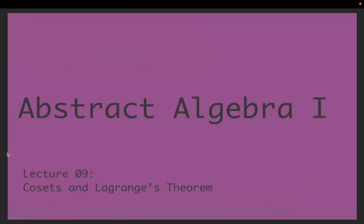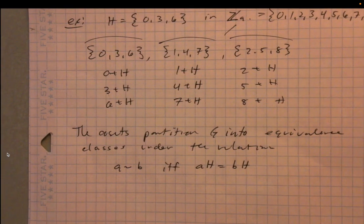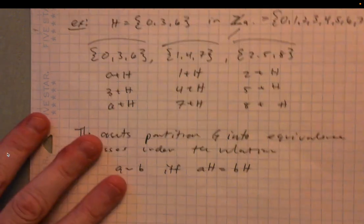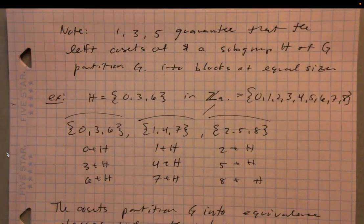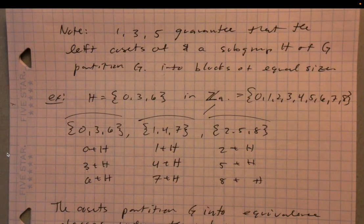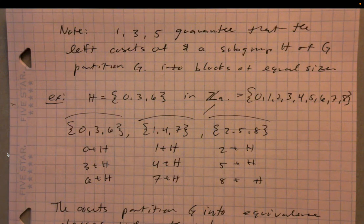Hey everyone, welcome back to Abstract Algebra 1. This will be Part B of Lecture 9. When we left off a moment ago, we were discussing how the left cosets of a subgroup H of G actually create a partition of G, right? And specifically, a partition where all of the parts are of equal size.